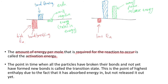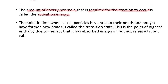The point in time where all the particles have broken their bonds but have not yet formed new bonds is called the transition state. This is the point of highest enthalpy or chemical potential energy, because it has absorbed a large amount of energy in bond breaking but not yet released any through bond formation. Once the bonds reform, that energy gets released as heat or other forms, and the energy returns to a more reasonable amount. That's all the definitions we need to remember — we'll go through their context in later videos. Adios.